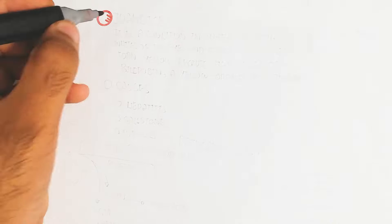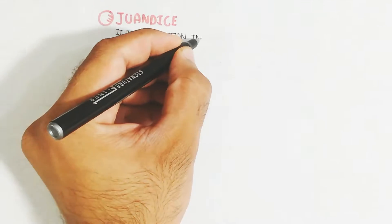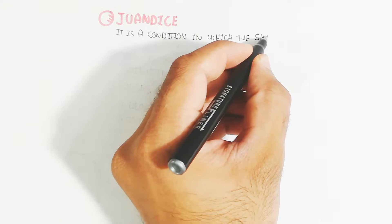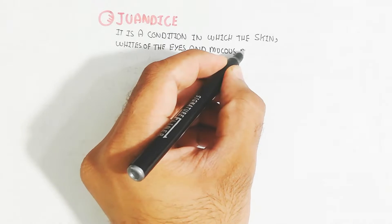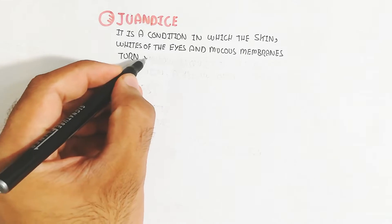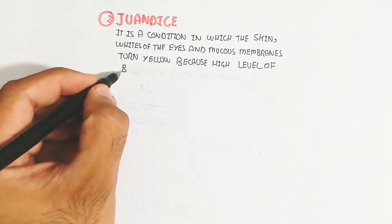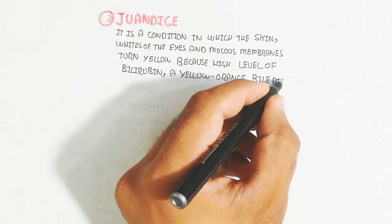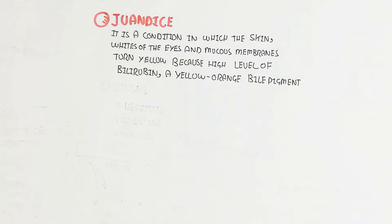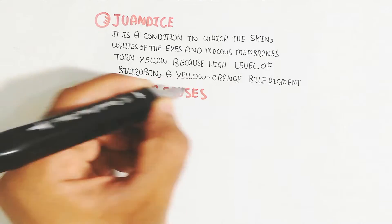In this video we will discuss jaundice. Jaundice is a condition in which the skin, whites of the eyes, and mucous membranes turn yellow — from colorless to yellow — because of a high level of bilirubin, a yellow-orange bile pigment. Bilirubin is the major cause of jaundice, and its level in the body should remain normal; if it increases, jaundice will occur.